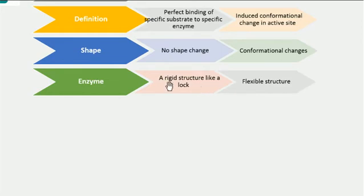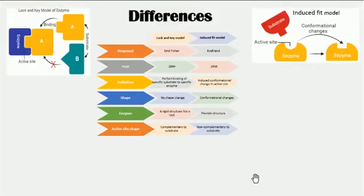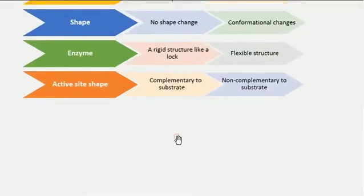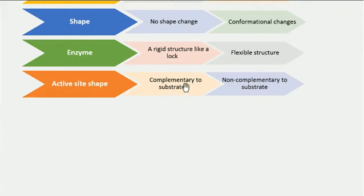According to the Lock-and-Key model, the enzyme is a rigid structure, just like a lock. While according to the Induced Fit model, the enzyme is a flexible structure that can change its shape. Regarding the active site shape, in the Lock-and-Key model the active site is complementary to the substrate — just like a specific key has a shape matching a specific lock, they are complementary to each other.